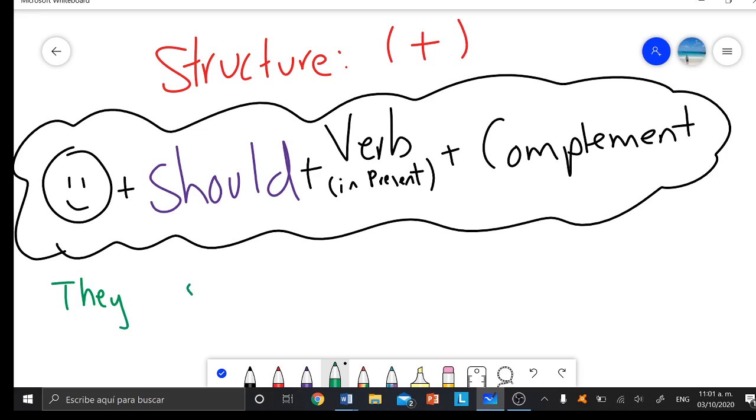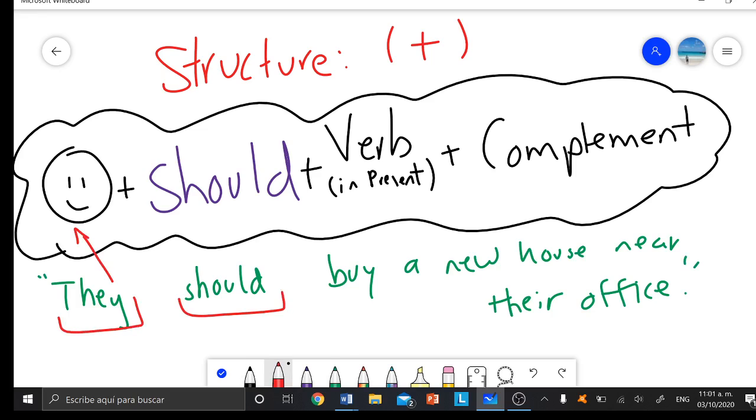An example will be like this: They should buy a new house near their office. Over here I'm just saying an opinion. We have: they, ellos, should, deberían, buy, deberían comprar, a new house, una casa nueva, near the office, cerca de su oficina. You're giving the opinion that they should do that so they don't spend so much money. That's going to be an example.